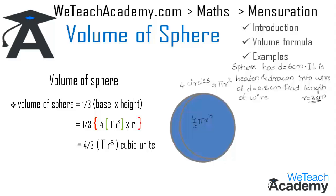Substituting r = 3 in the formula for volume — four-thirds πr³ — we get four-thirds into 22/7 into 3³ cubic centimeters. The given wire has a diameter of 0.2 centimeters, so the radius of the wire equals half of 0.2, giving r = 0.1.